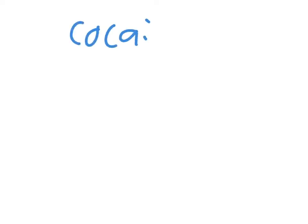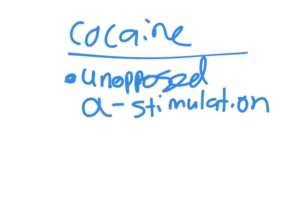If somebody has taken a sympathomimetic — let's say cocaine, for example — you cannot give them a beta blocker alone. This is called unopposed alpha stimulation, and this is the basis for how you treat pheochromocytoma.